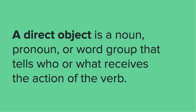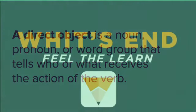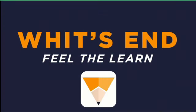Okay, just a reminder — a direct object is a noun, pronoun, or word group that tells who or what receives the action of the verb. Hopefully after watching this video, you'll be able to find all those direct objects out there. Thanks for joining us at Wits End.